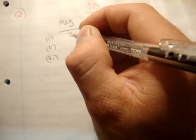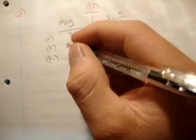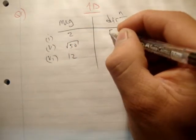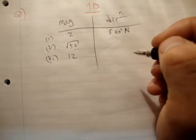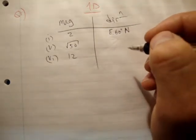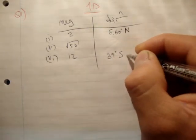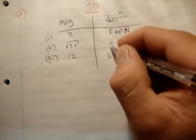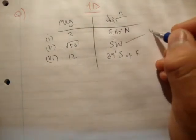Question 1, we have 2 magnitude, E60°N direction. Question 5, square root of 50, southwest. Question 6 we have 12, 39 degrees south of east. Now, just a point to note here, southwest means 45 degrees.